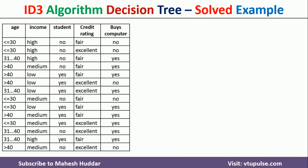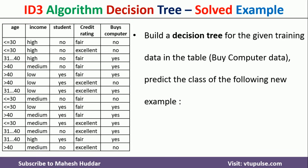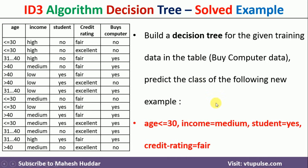In this example, we have been given a dataset with four attributes: age, income, student, and credit rating. Buying a computer is the target in this case. Given this particular dataset, we need to build a decision tree using the ID3 algorithm, and then classify a new example into one of the classes — yes or no.